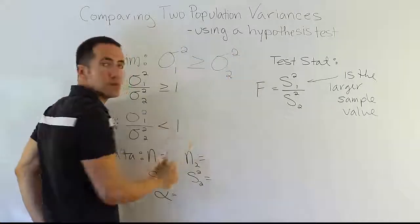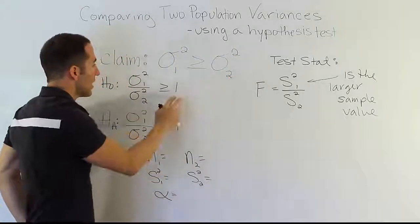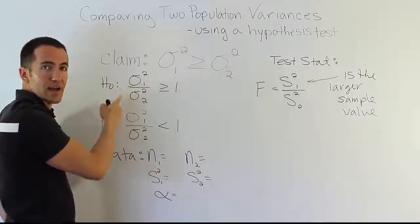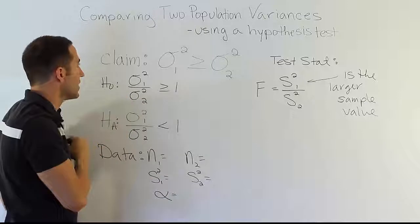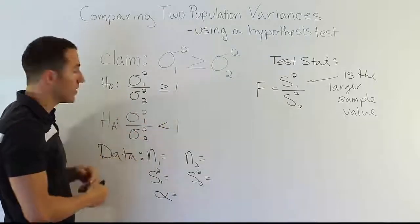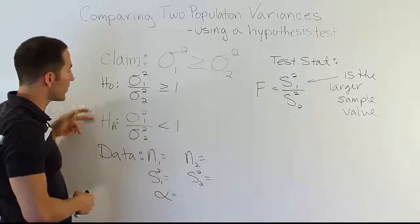What I did is I divided the right-hand side of this expression by this guy, sigma squared sub 2. I divided the right-hand side by it so that I was left with 1 over here. And of course, I have to put it on the other side now as well. So that becomes greater than or equal to 1, and if I do it down here, it becomes less than 1. So H₀ and Hₐ are formed in that manner.